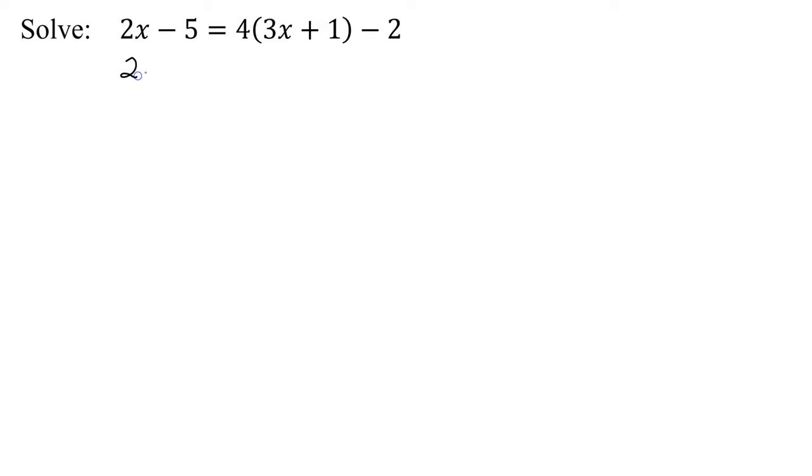So the left-hand side, I'm going to leave exactly as it is. And on the right-hand side, I'm going to get 4 times 3x is 12x, and then 4 times 1 is 4 minus 2. So I've removed my parentheses.